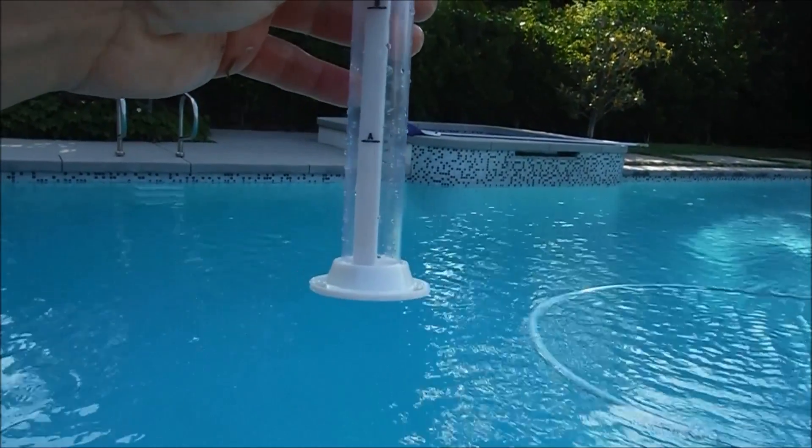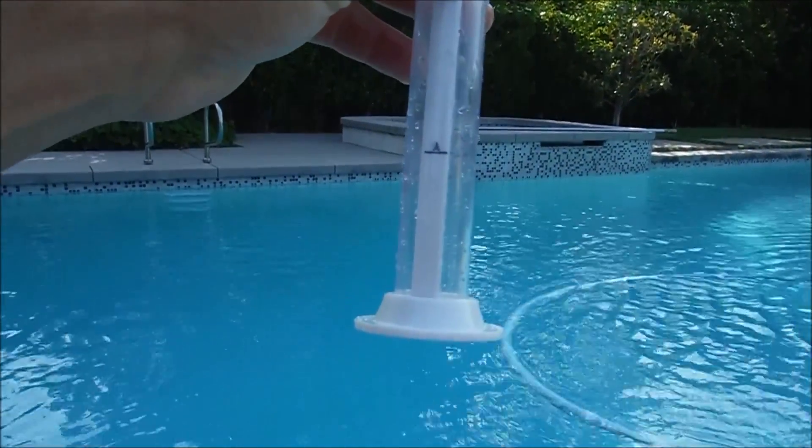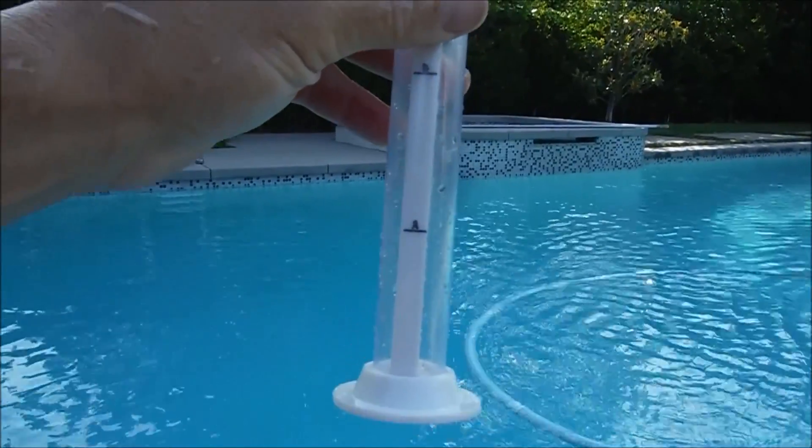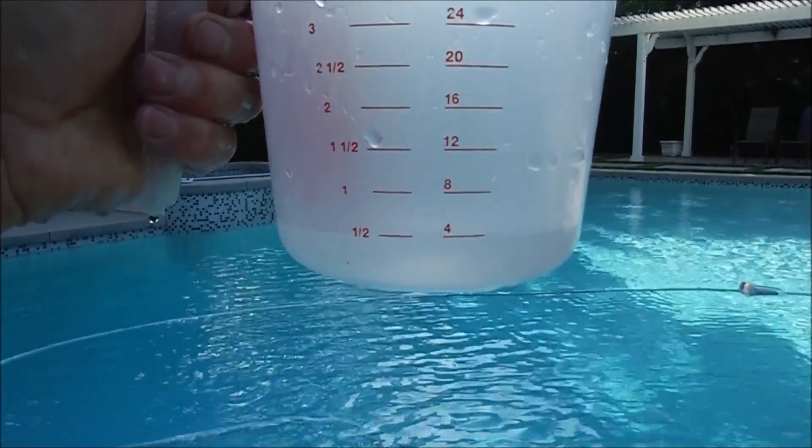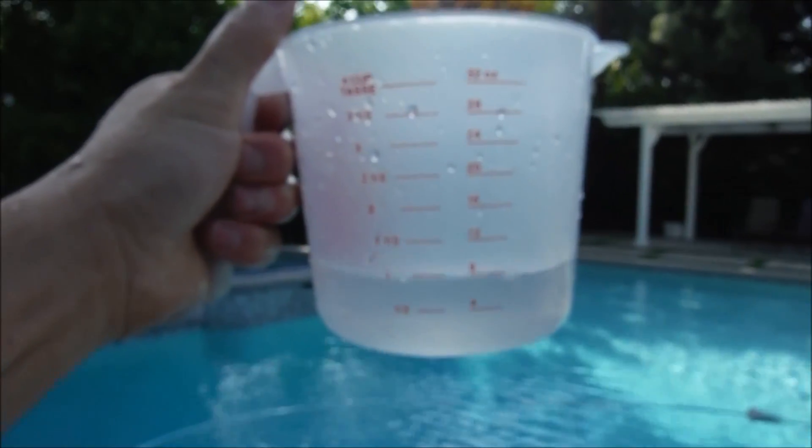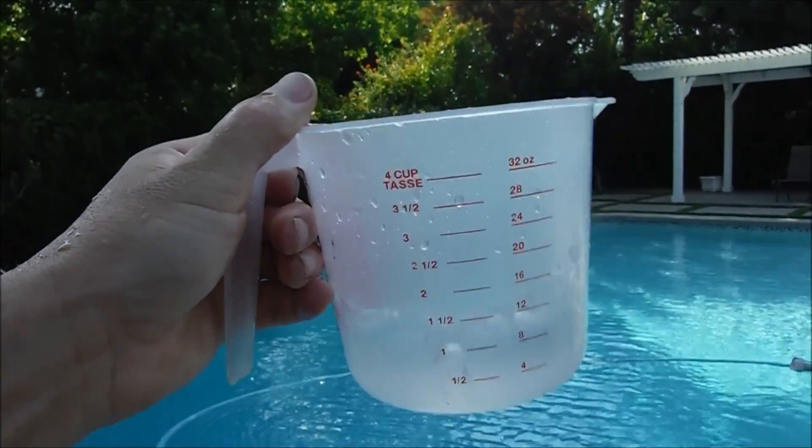And once you clean your vial after testing you want to do a dilution test. You want to fill line A up with half pool water, half tap water, and then line B up with the solution again. I'm going to get 4 ounces of pool water here. So I got 4 ounces of pool water so I'm going to fill up the tap water to the 8 ounce mark. I'm going to mix it together and pour it into the tester.